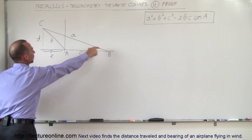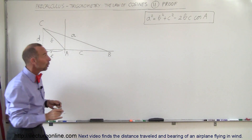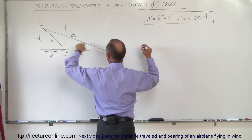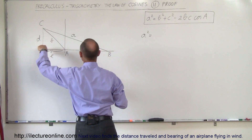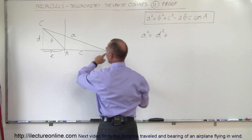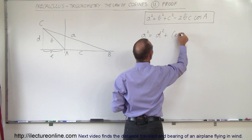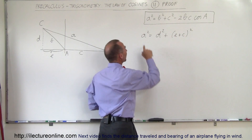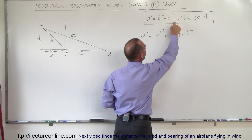So now we have a right triangle, and of course using the Pythagorean theorem, we can say that the hypotenuse squared — a squared — must equal this side squared, d squared, plus this side squared, which is the sum of E plus c, the whole quantity squared. We already have the expression here, but now how do we turn this into that?